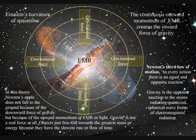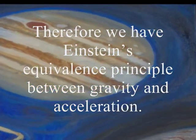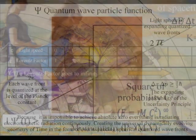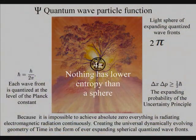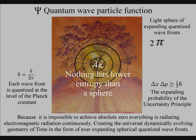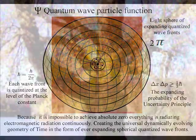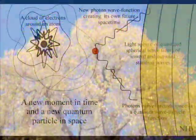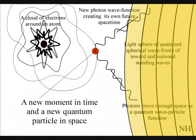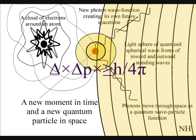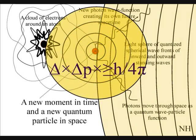In this theory, gravity is a secondary force to the electromagnetic force. Objects just freefall towards the greatest mass or energy because it has the slowest rate that time flows. The second law of thermodynamics falls out of this theory. The organization for the spontaneous disorganization of entropy is formed by the spherical symmetry of the quantum wave particle function. The spontaneous absorption and emission of light forms the flow of time with photon energy cascading down forming greater degrees of freedom for the flow of entropy.